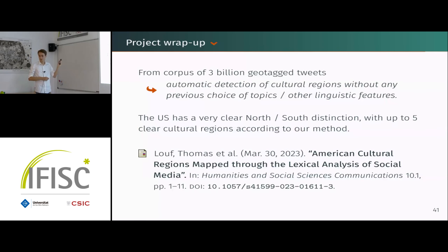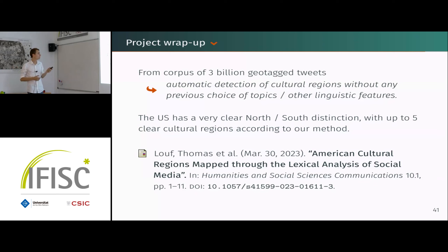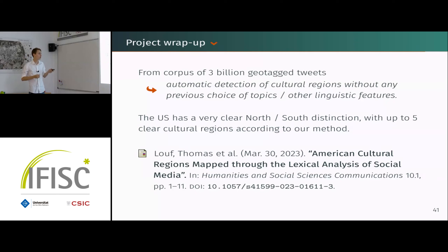To wrap up this work: we used a very large corpus of geotagged tweets, leveraging the relationship between language and culture to automatically detect cultural regions without making any a priori choice of defining features. The main result is a very clear north-south basis of distinction in the US and up to five clear cultural regions, which can even be non-contiguous according to our method.